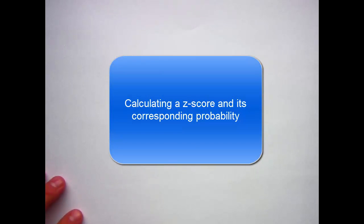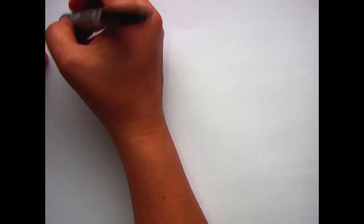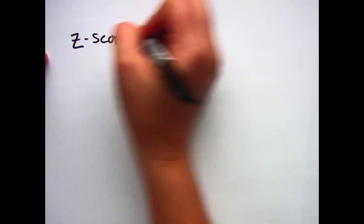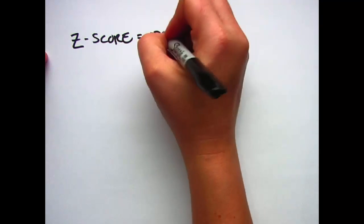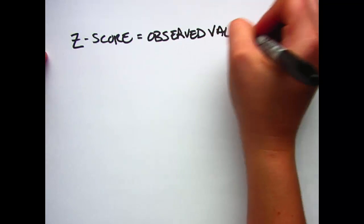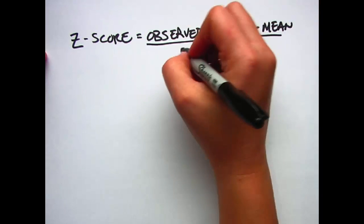Today we're going to continue talking about how to calculate a probability connected to a z-score. Remember, z-scores are used to measure the number of standard deviations away from the mean you are. The formula is z-score equals the observed value minus the mean divided by standard deviation.